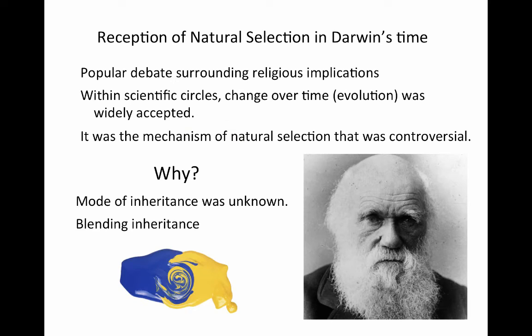The prevailing idea at that time — and we've seen this slide before — was this idea of blending inheritance: that offspring were somehow some kind of average between the characteristics of their two parents. We saw that this idea about the way inheritance works was problematic for the mechanism of natural selection because of this dilution effect. Every time a trait is averaged with another trait, it is only half strength. So this was a big problem for natural selection as a mechanism.